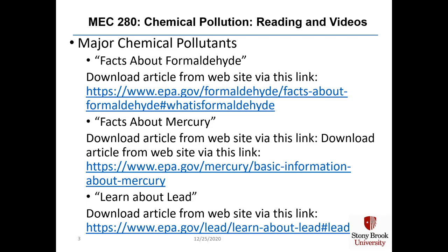Mercury and lead are some of the most dangerous metals out there, and their negative effects on people have been known for centuries. Mercury was played with by scientists in the 19th and 18th centuries and it caused madness. And lead can do the same thing — severe brain damage.